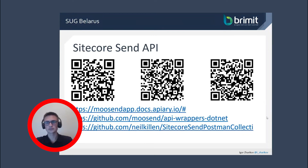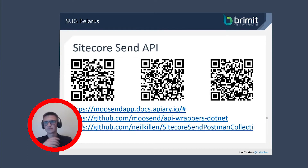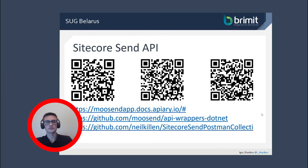By default, the Sitecore Send API is provided as a Blueprint specification, which isn't the most convenient for testing in a tool like Postman. However, another Sitecore developer, Neil Killen, wrote an article about how to convert the specification to a much more convenient Postman collection. Here I leave all the links and QR codes to get started using the Sitecore Send API.